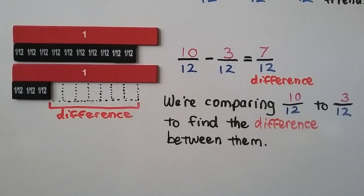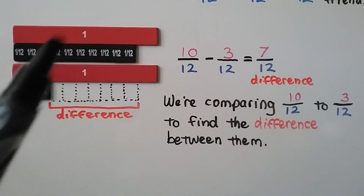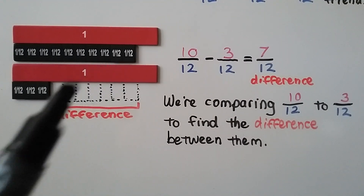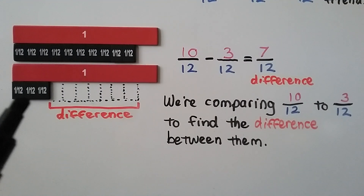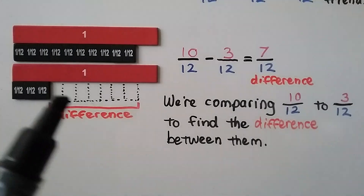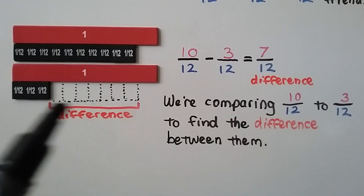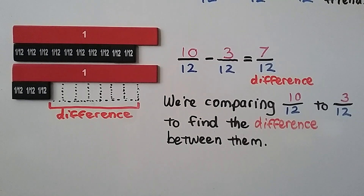We're comparing 10 twelfths to 3 twelfths. Here's one whole; here are 10 twelfths. We compare it to the 3 twelfths for the 3 slices that were left, and the area with the bracket shows the difference. 10 twelfths minus 3 twelfths equals 7 twelfths difference.